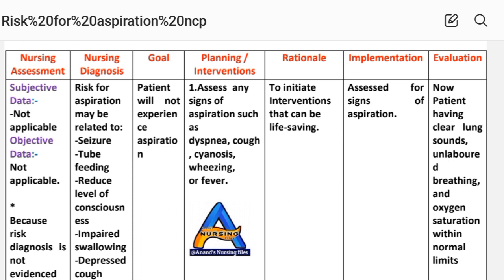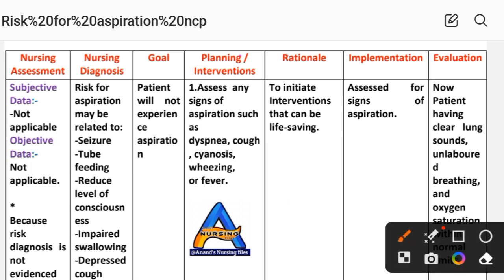The goal is that the patient will not experience aspiration. Next, we move to nursing interventions and rationale. Nursing intervention and planning means providing interventions to the patient, with a specific reason behind each intervention. Implementation is the acting phase of the nursing care plan.